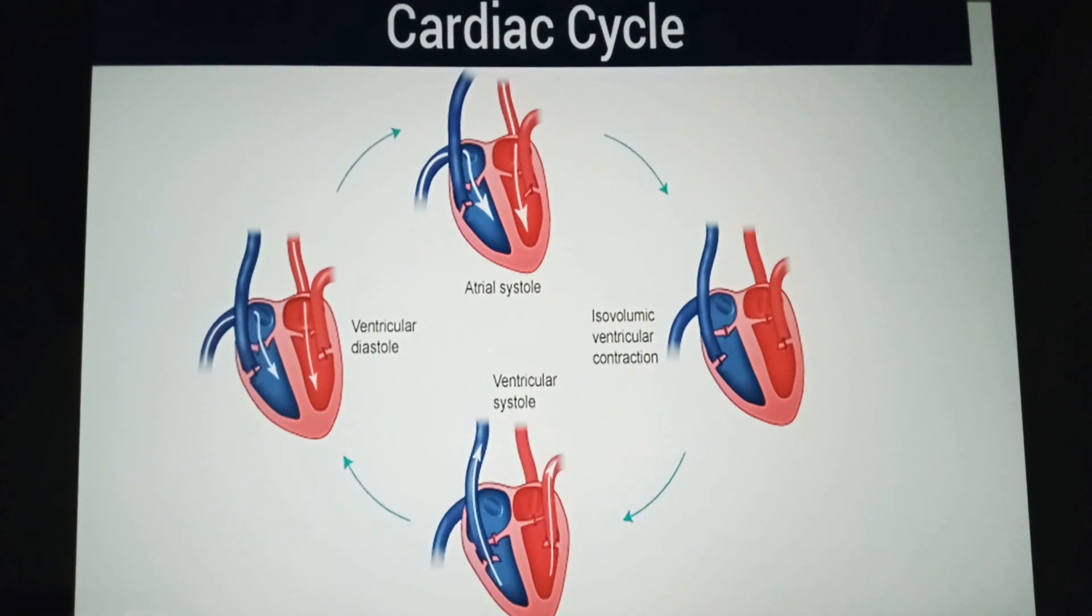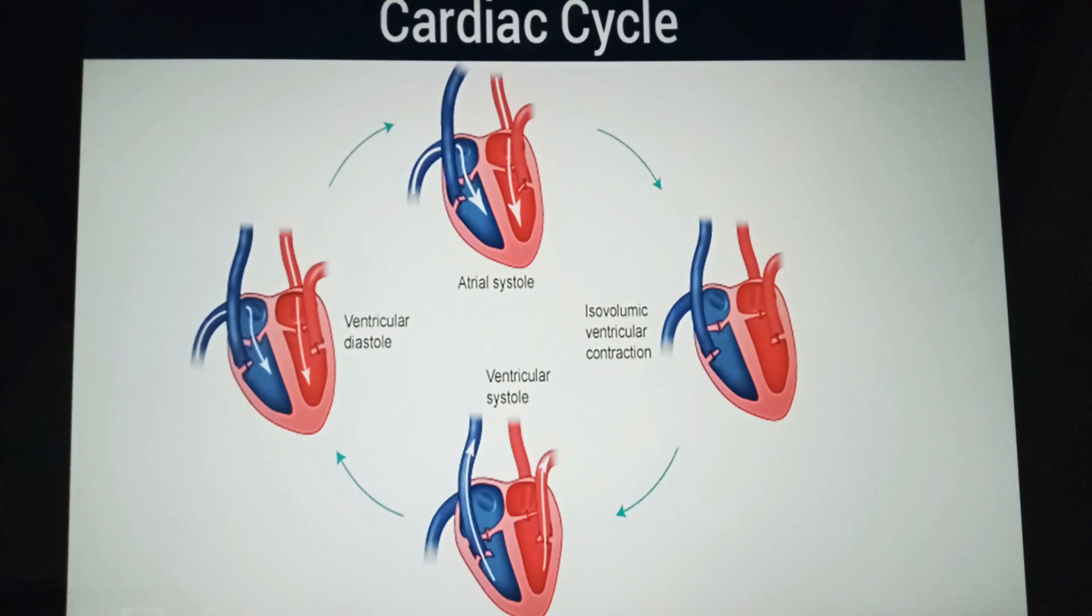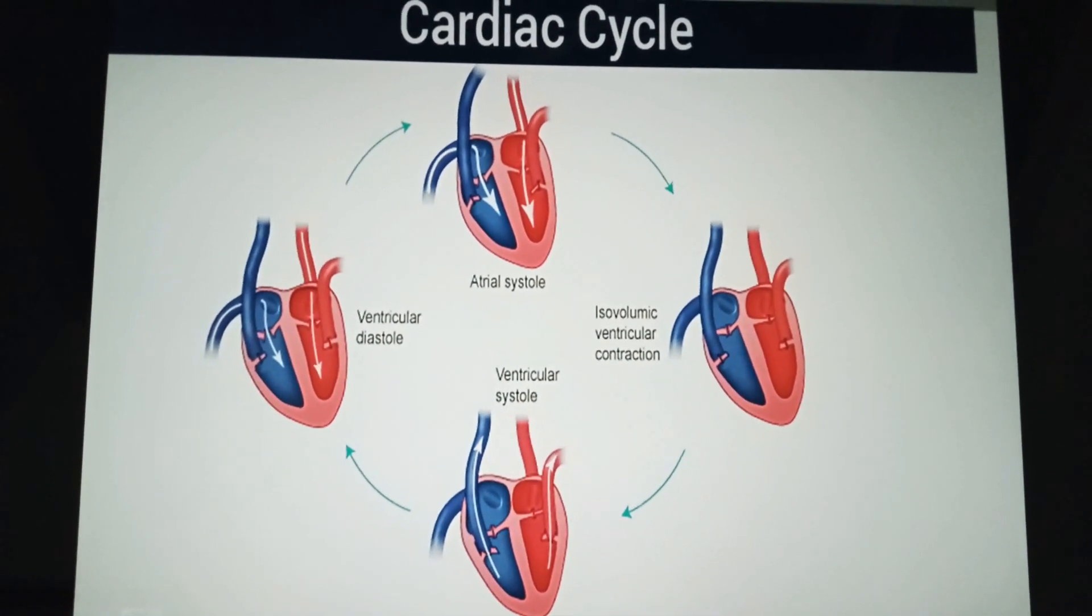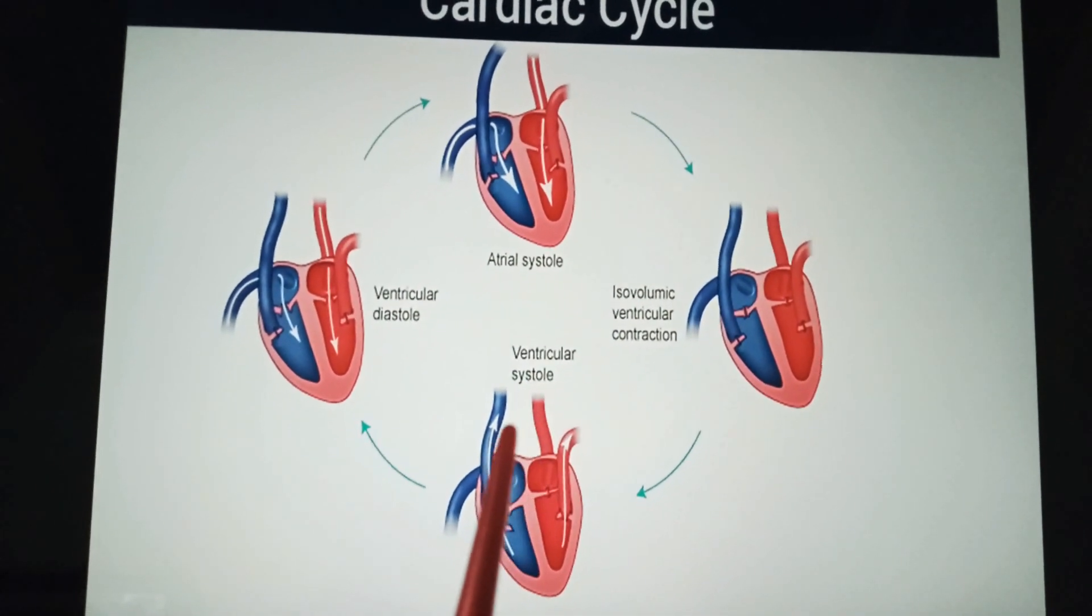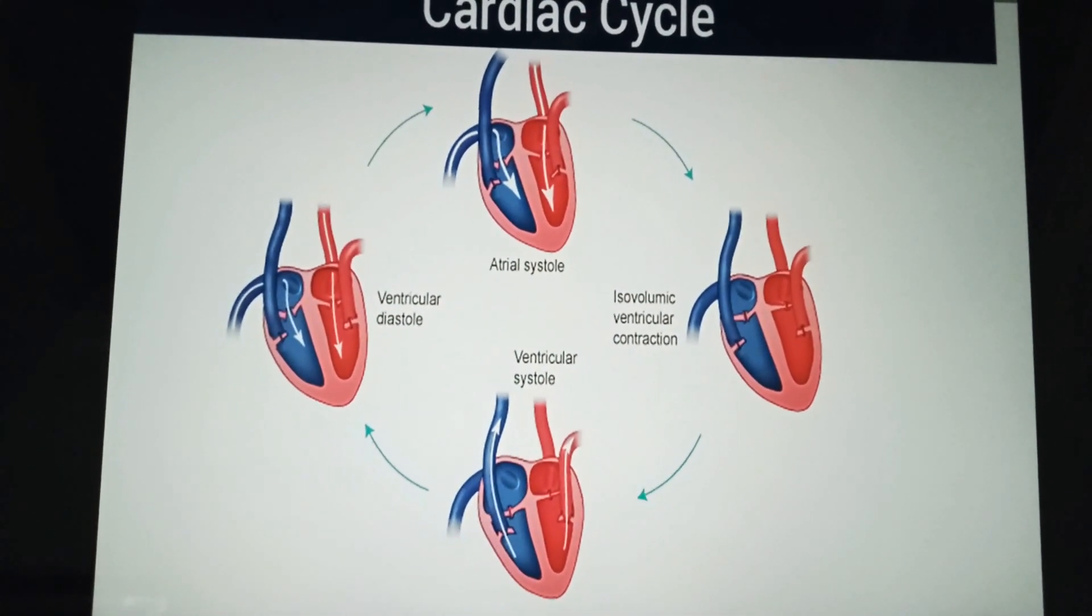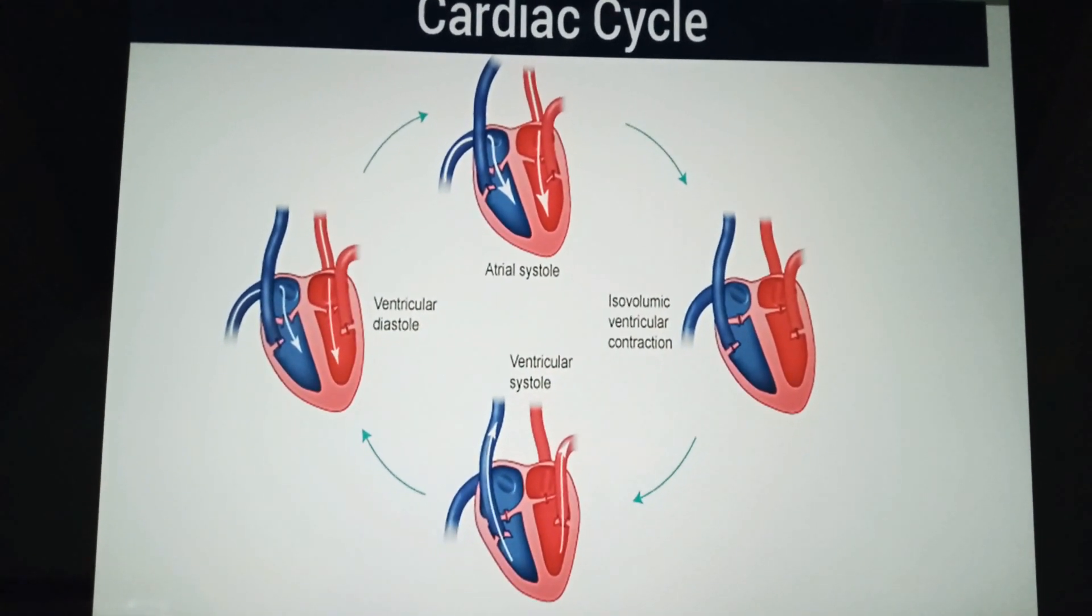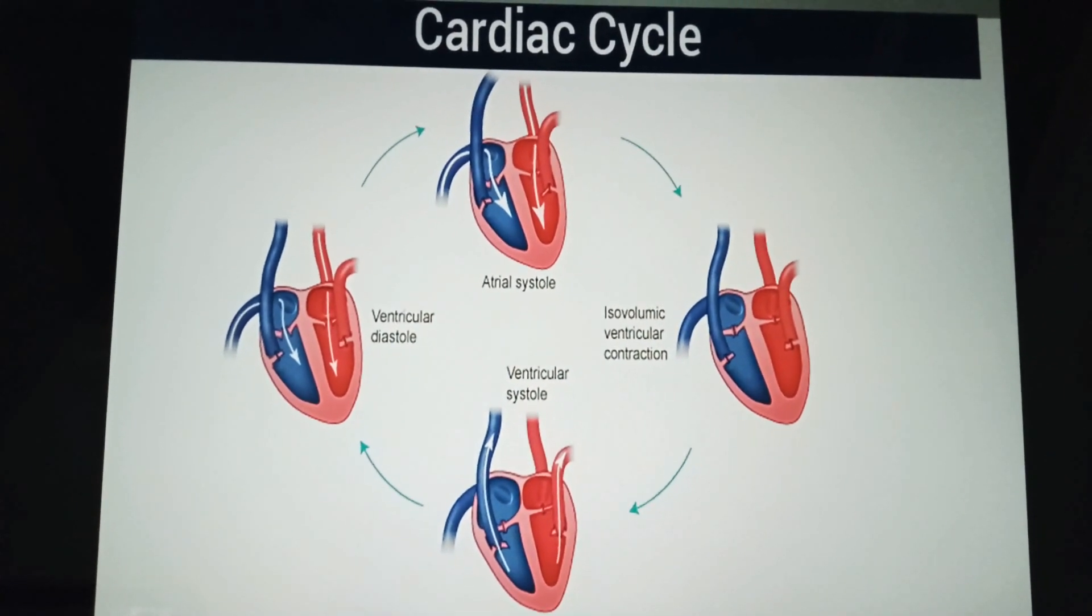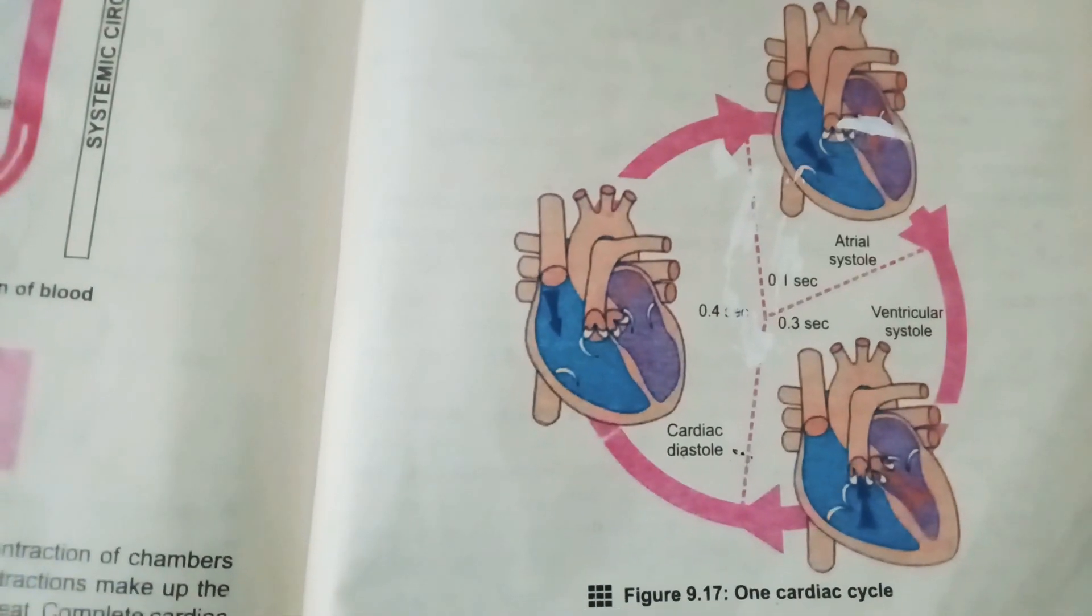Now both ventricles contract and pump blood towards body and lungs. The period of ventricular contraction is called ventricular systole. In one heartbeat, diastole lasts about 0.4 seconds, atrial systole takes about 0.1 seconds, and ventricular systole lasts about 0.3 seconds.